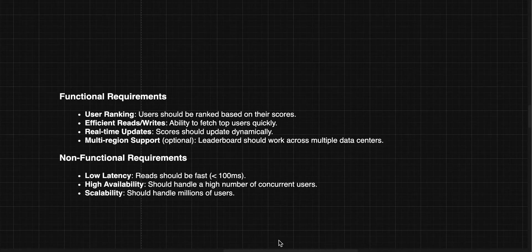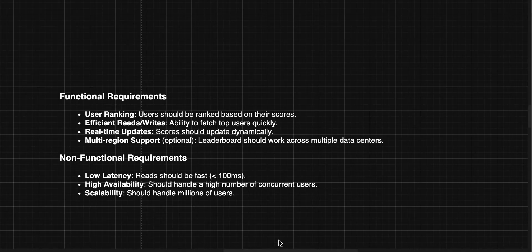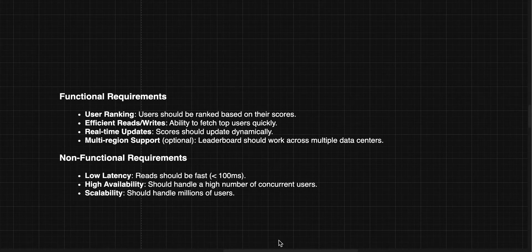The basic and most important functional requirement here is user ranking — we must tell the user what rank they are at in a particular game. Since a user can be associated with multiple games, we have to tell in which game they were at which rank. Other requirements include efficient read and write, data consistency, and support for real-time updates happening in our system.